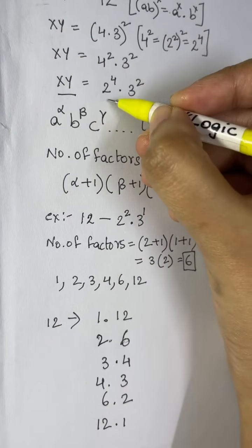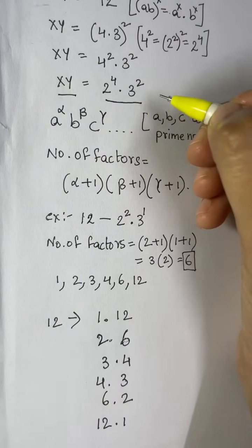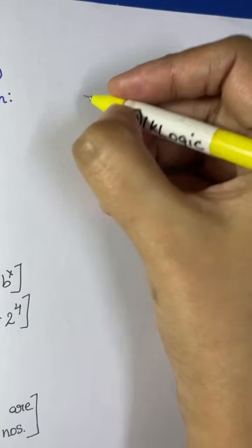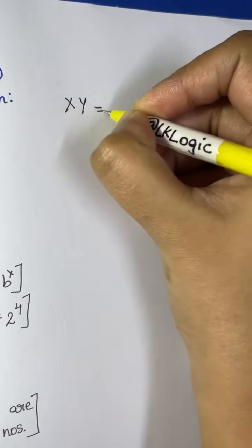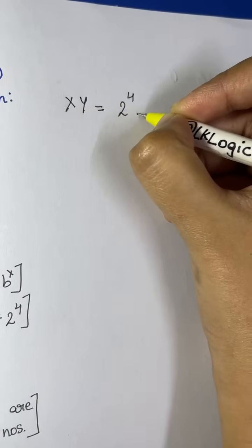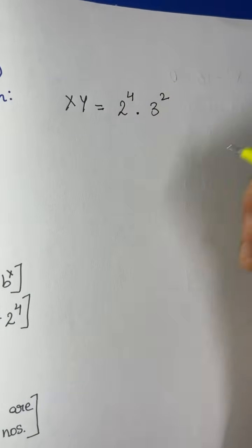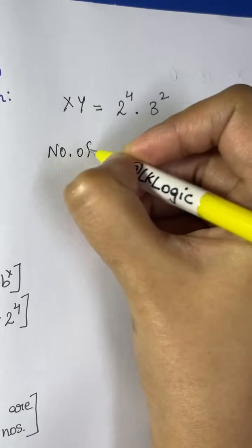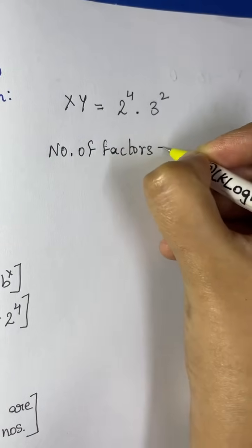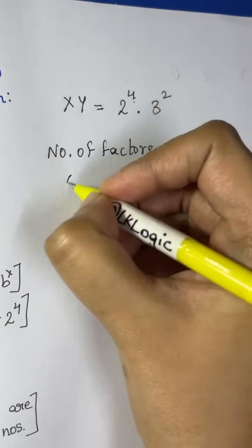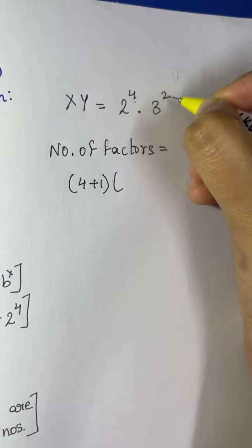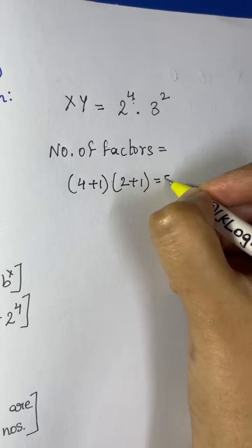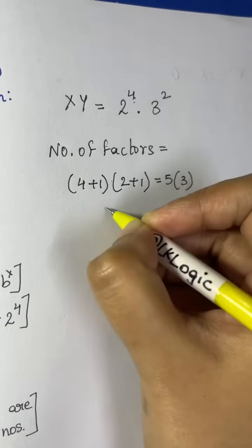We have xy = 2⁴ × 3². So the number of factors equals (4+1) × (2+1) = 5 × 3 = 15.